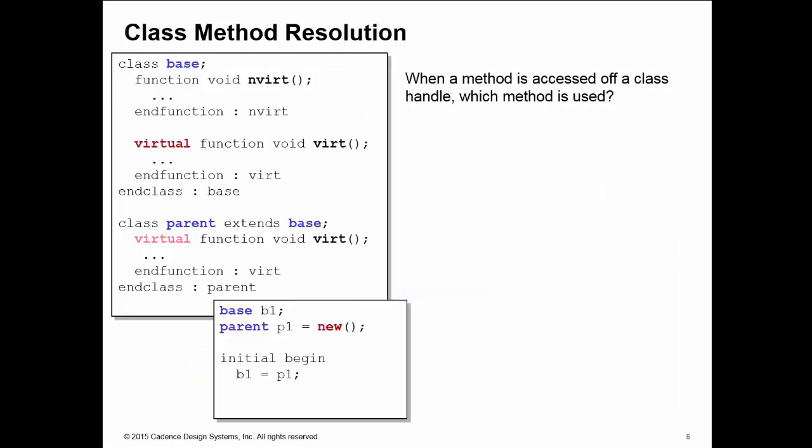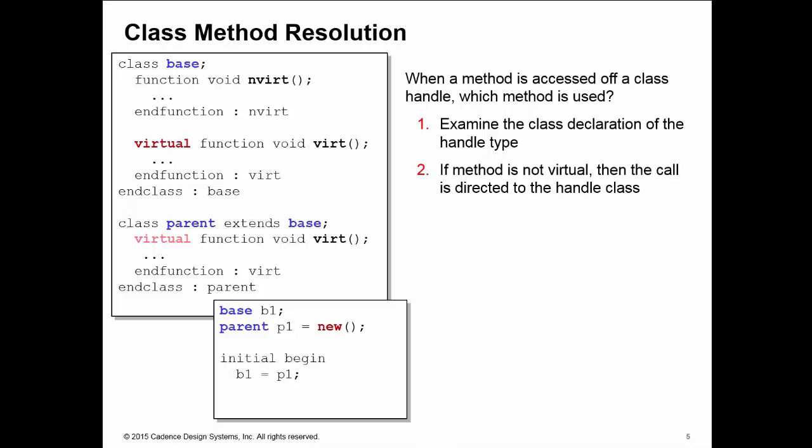When a method is accessed on a class handle, we always go to the class declaration of the handle type first. If the method is not virtual, then we execute the implementation we find in the handle type. So here when I call b1.invert, I jump to the base class first, find that the method is non-virtual, and execute the implementation in the base class — even though b1 contains a pointer to an instance of the parent class.